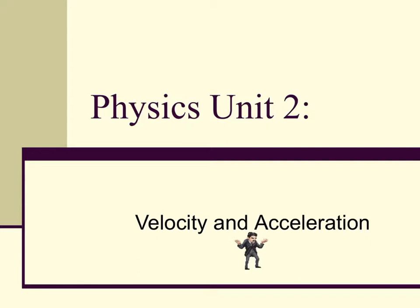Acceleration can occur in a straight path or in uniform circular motion, and it can be both positive or negative in value. Any time the sign of the acceleration is the same as the sign of the velocity, the object will speed up. If the signs are opposite, the object will slow down. Acceleration is a vector quantity, and when either velocity or direction changes, there is an acceleration or deceleration. To accelerate an object requires the application of some type of force.